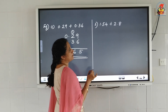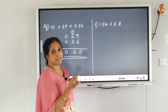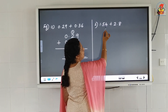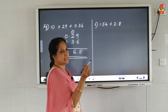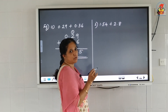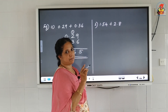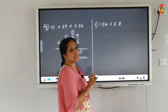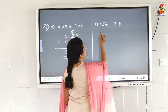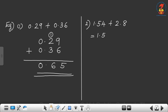Next: 1.54 plus 2.8. Look at the decimal places — 1.54 has 2 decimal places, and 2.8 has only 1 decimal place. These two decimal numbers are not like decimals. So we can make them into like decimals: 1.54 plus 2.80.